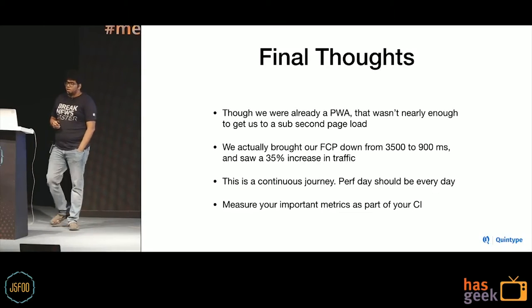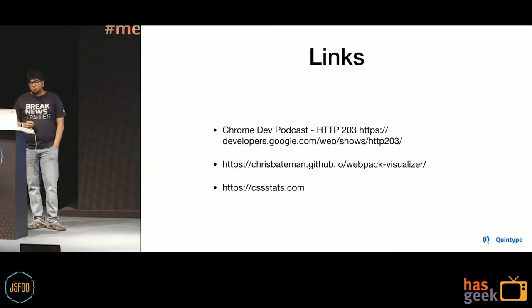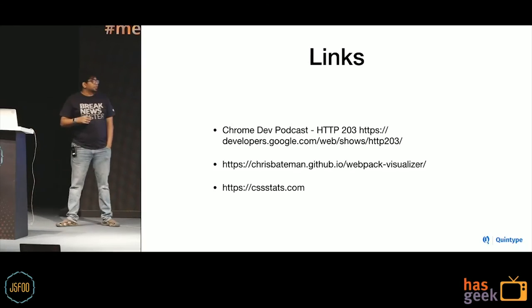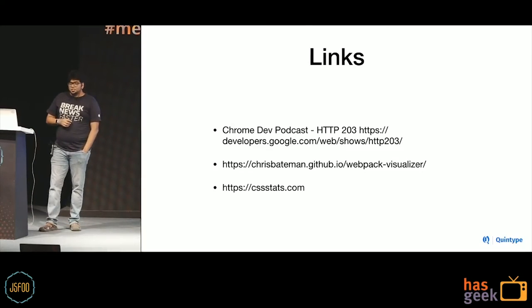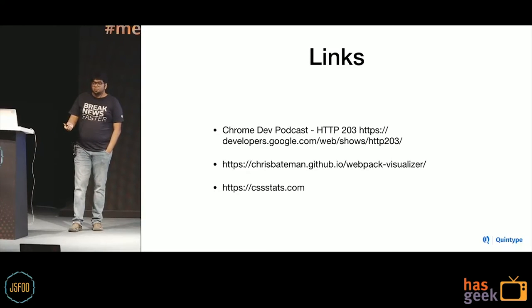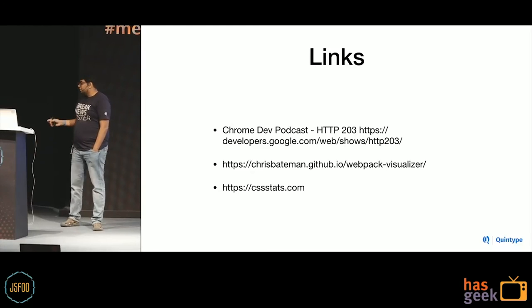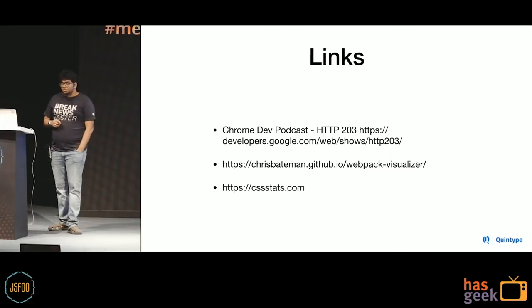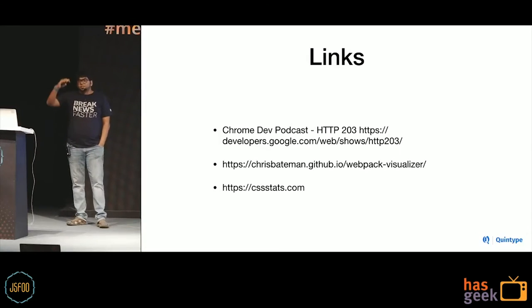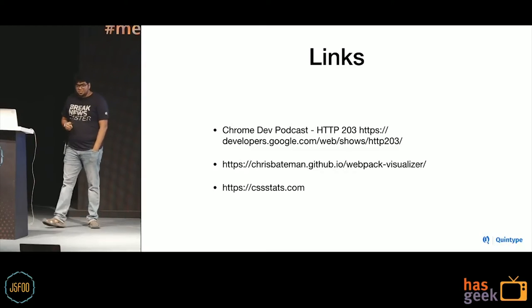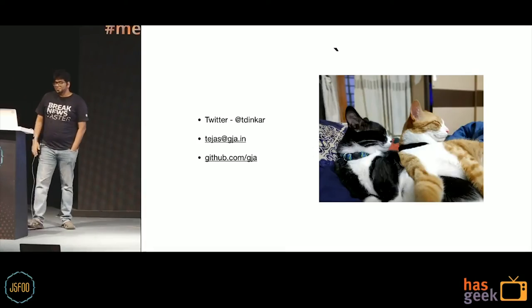The easiest way to make that work is to measure your important metrics as part of CI. Lighthouse is now available as an NPM module, can launch Chrome in headless mode, and generate your response as a JSON response. It's very easy to run this every minute or every hour. There are even services like Treo.sh that will run Lighthouse against your site every minute and tell you your speed, alerting you when things are bad. In closing, some great resources: the Chrome Developer Podcast called HTTP 203 - they publish about a video every three days and every single video has something new. They recently did a great video on new browser features to measure performance with navigator.performance. Also the Webpack Visualizer, and CSSstats.com which goes through your site and tells you how many fonts, sizes, and colors you've used.